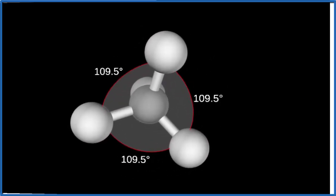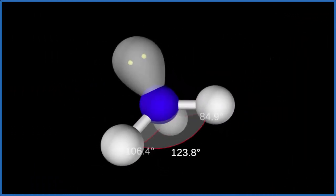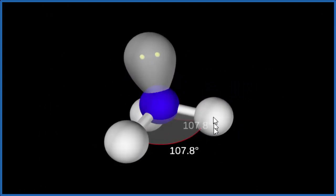If we look at ammonia, now we have that one lone pair. You can see the shape is different. These hydrogens are forced down a little more.